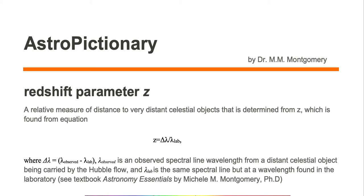Redshift parameter z is a relative measure of distance to very distant celestial objects that is determined from z, which is found from the equation z equals delta lambda divided by lambda lab.